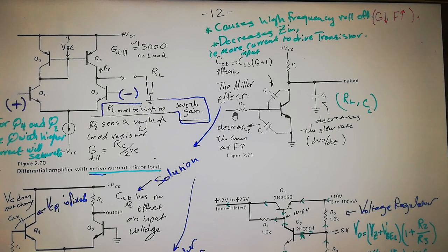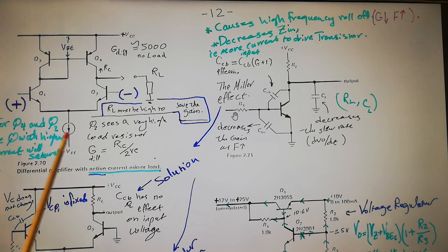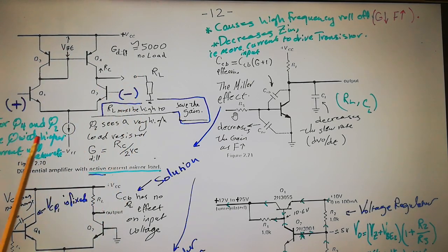Hello everybody, this is my tenth lecture on transistor design and applications. Today's main topic is the Miller effect on transistors in gain and frequency response. But before I get to that, I would like to make a few comments on the differential amplifier stage. In my last lecture I ran out of battery and didn't complete that lecture properly, so let me spend one minute talking about the gain of that differential amplifier.